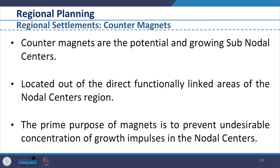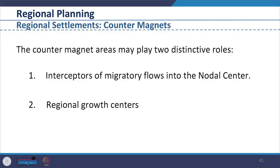Counter magnets are the potential and growing sub-nodal centers located outside the direct functional linked areas of the nodal center region. The prime purpose of counter magnets is to prevent undesirable concentration of growth impulses in the nodal centers and to disperse the same to counter magnets for more balanced development of the region. Counter magnet areas may play two distinct roles: as interceptors of migratory flows into the nodal centers, and as regional growth centers to achieve a balanced pattern of urbanization over time.